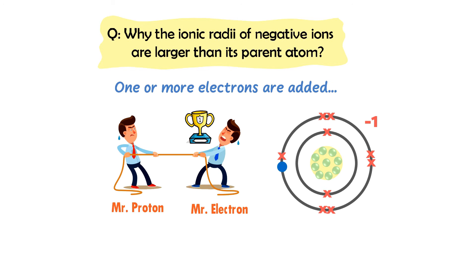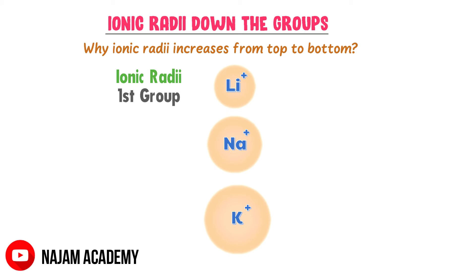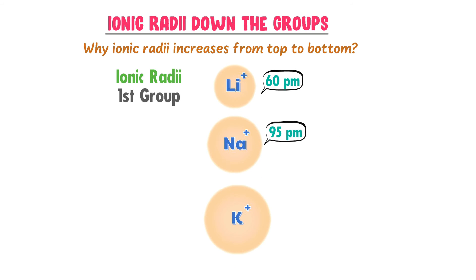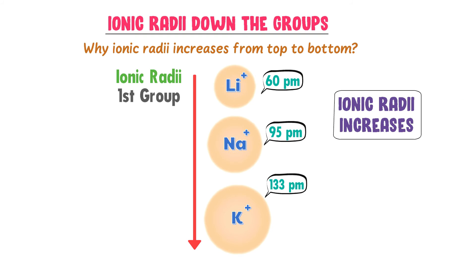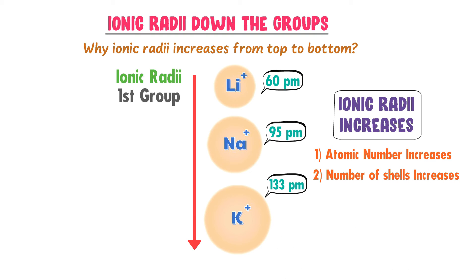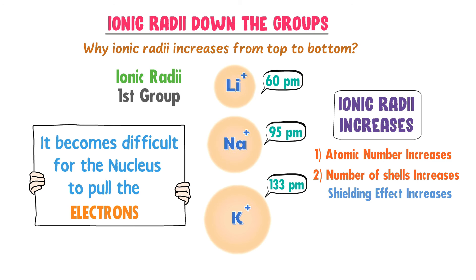Now let me teach you the periodic trend of ionic radius in the periodic table — why ionic radii increase from top to bottom, or down the group. Consider the ionic radii of first group elements: lithium ion, sodium ion, and potassium ion. The ionic radius of lithium ion is 60 picometers, sodium ion is 95 picometers, and potassium ion is 133 picometers. Going down the group, ionic radii increases because atomic number increases, the number of shells increases, and shielding effect increases, making it difficult for the nucleus to pull electrons with greater force.